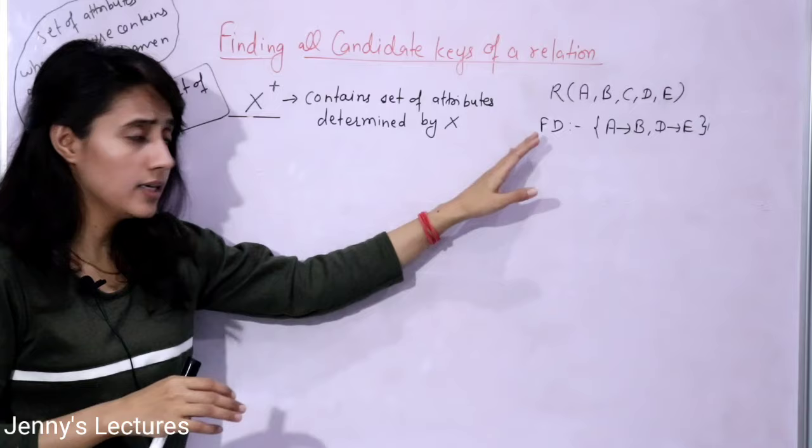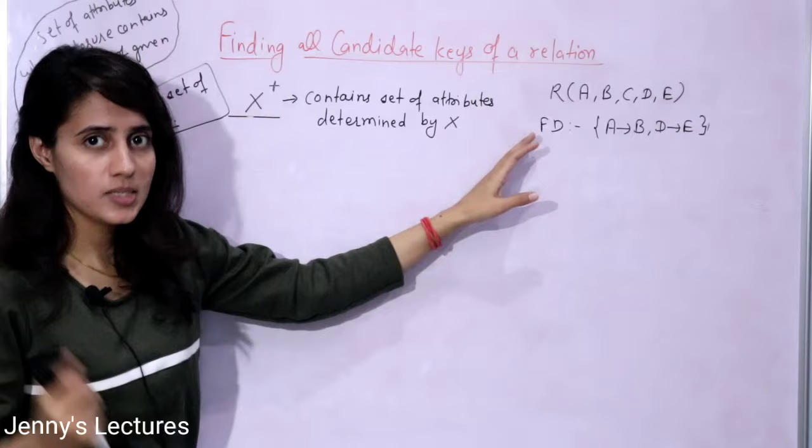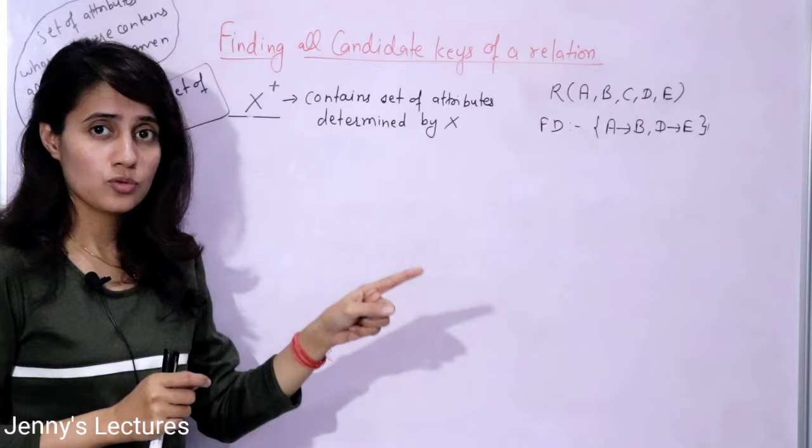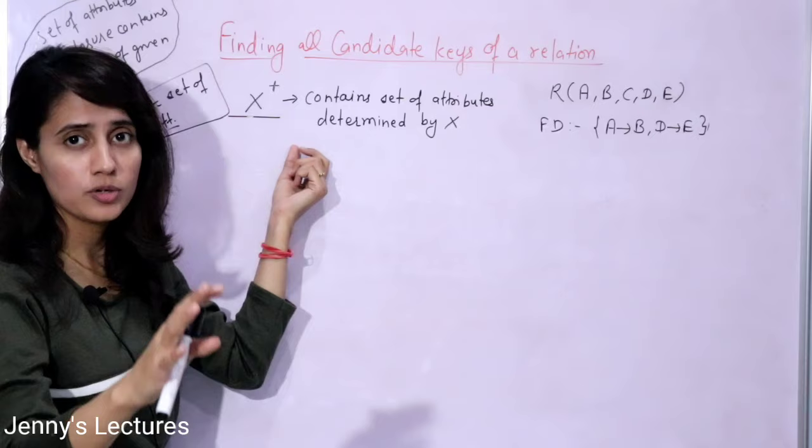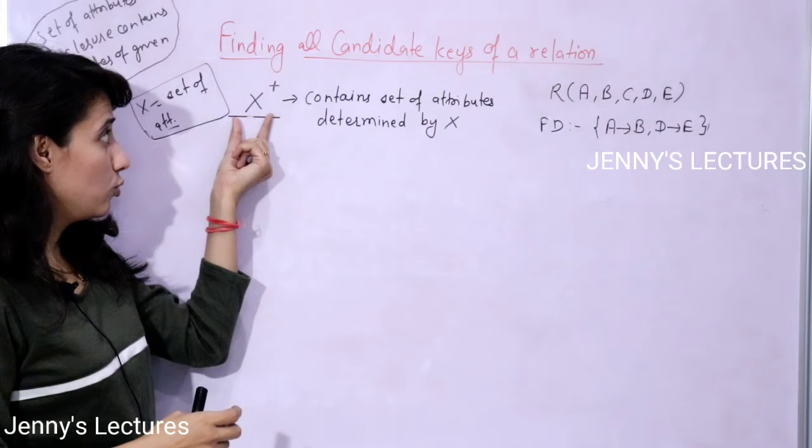This video is in continuation of the previous video, so you must check out the previous video first and then come to this one. The prerequisite is that you should know what attribute closure is and how to find it out, and what a super key is.